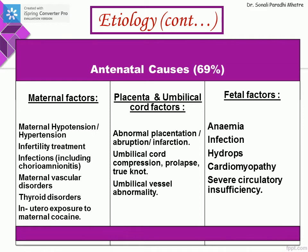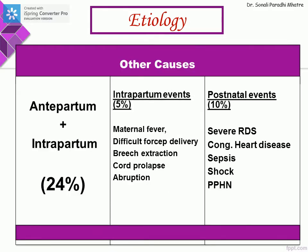Placental causes include abnormal placentation, abruption, umbilical cord compression, prolapse, and umbilical vessel abnormality. Fetal factors include anemia, infection, hydrops, cardiomyopathies, or severe circulatory insufficiencies. Antepartum plus intrapartum causes account for 24% of cases. Intrapartum events — 5% of cases — include maternal fever, difficult forceps delivery, breech extraction, cord prolapse, and abruption when the baby does not cry after birth.